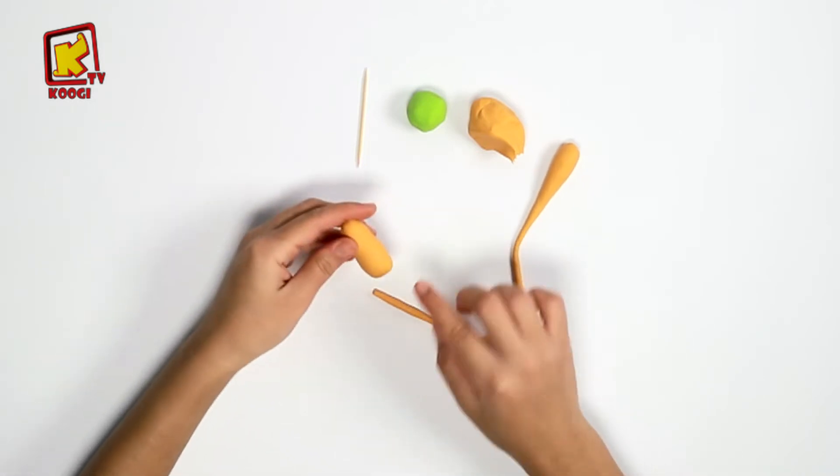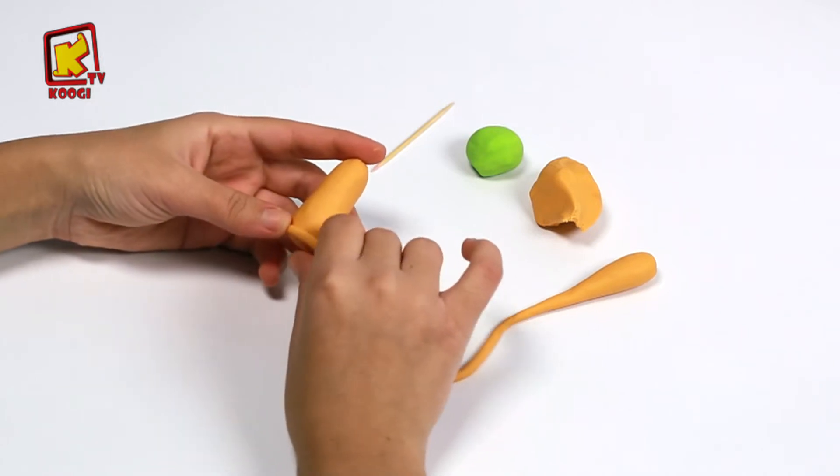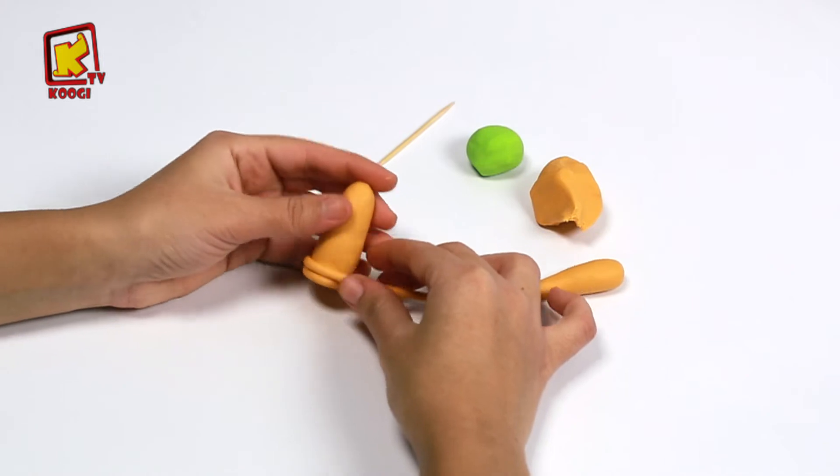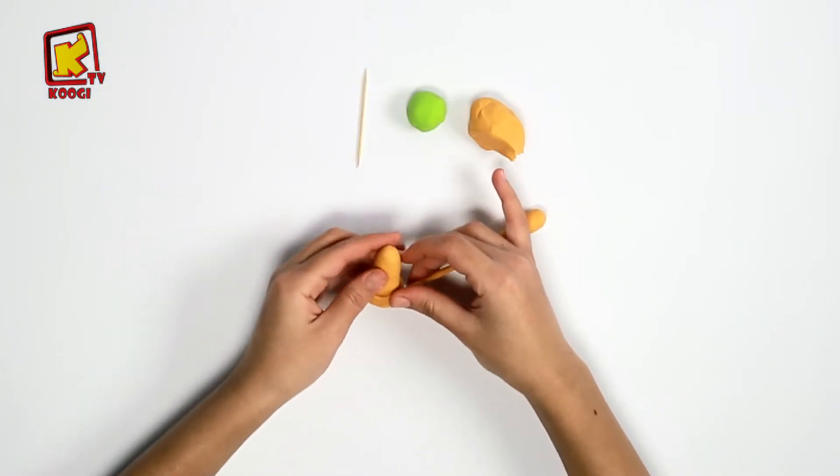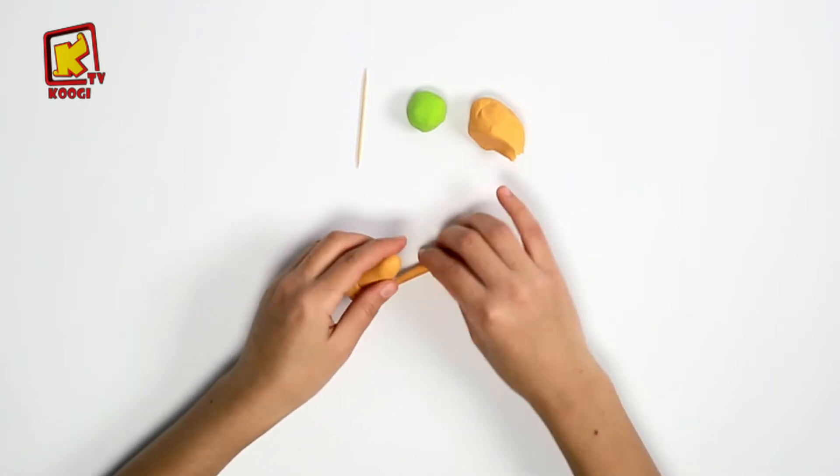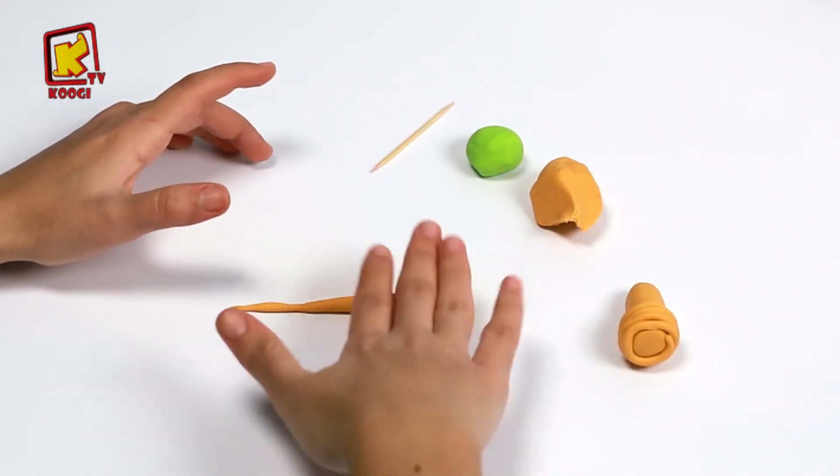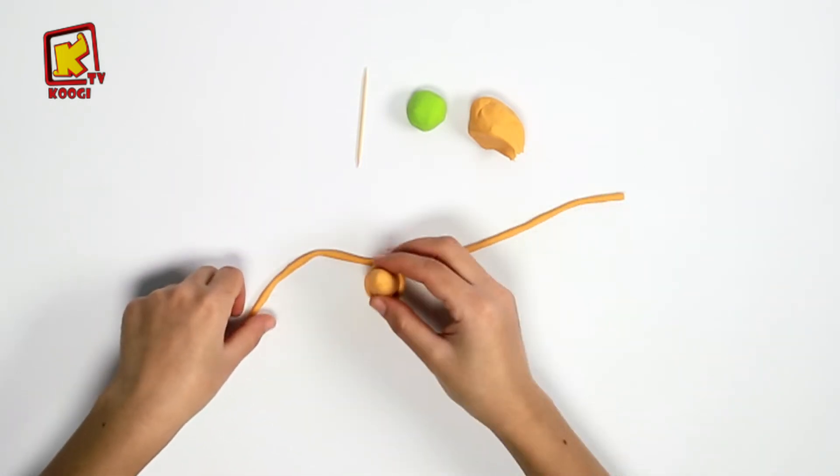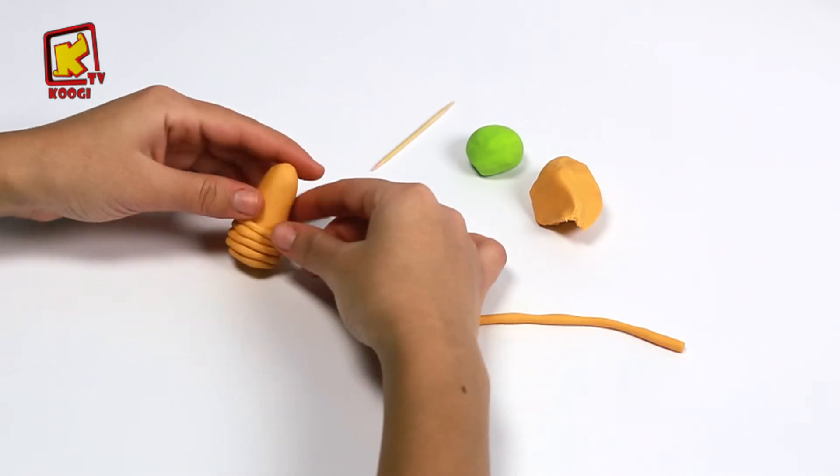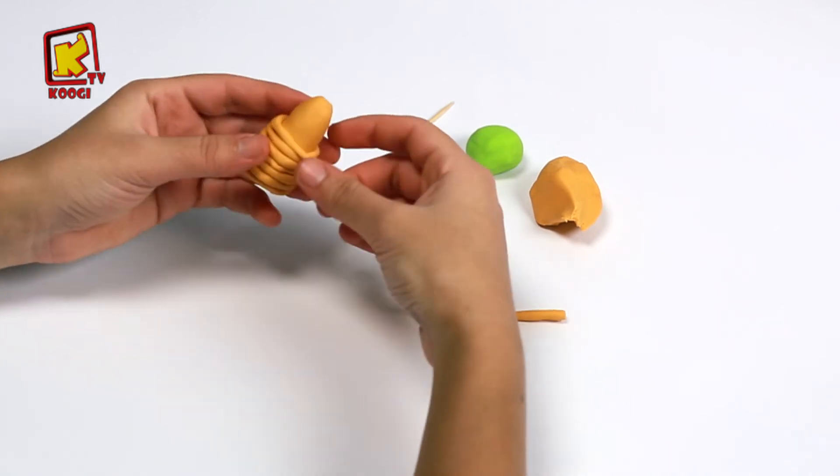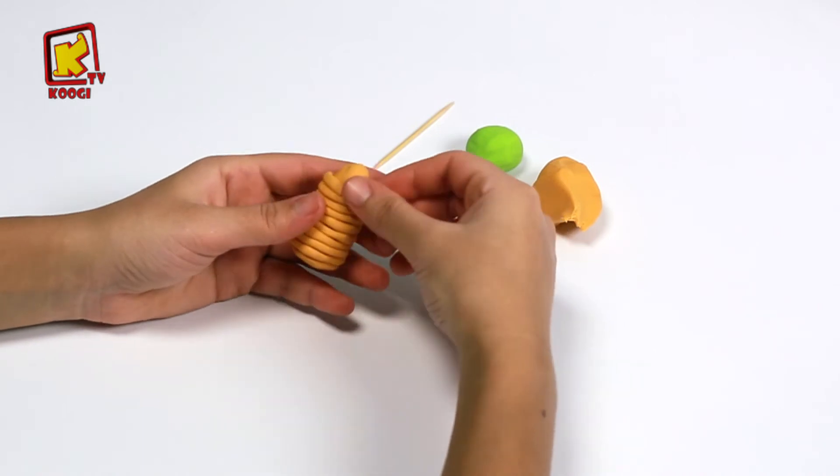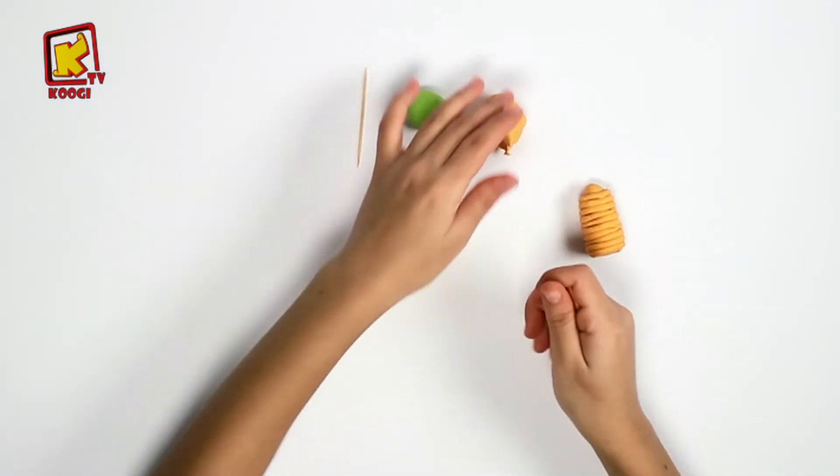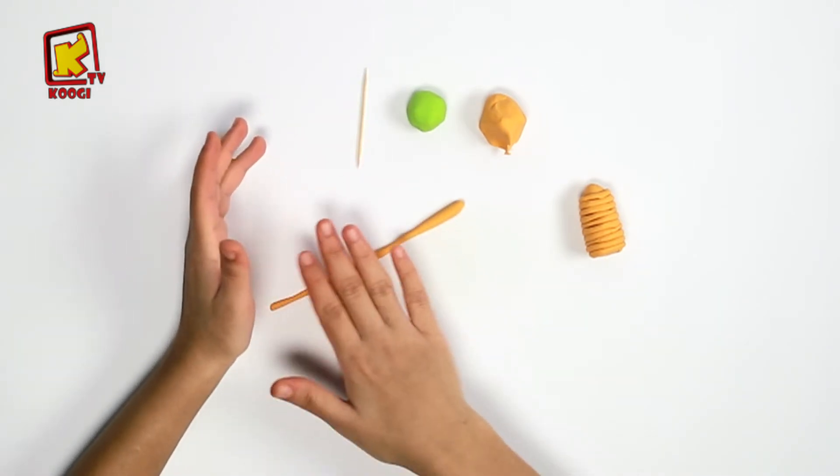Puis, on va le coller sur le maïs. Et on va continuer à rouler pour le coller ici sur le maïs.